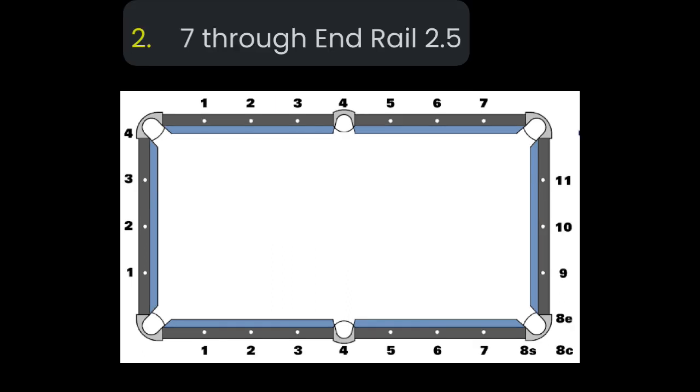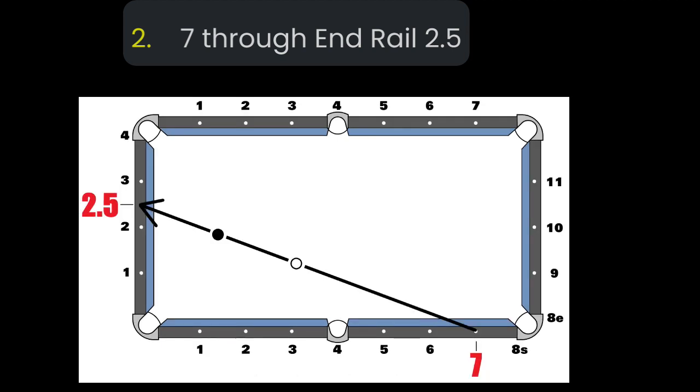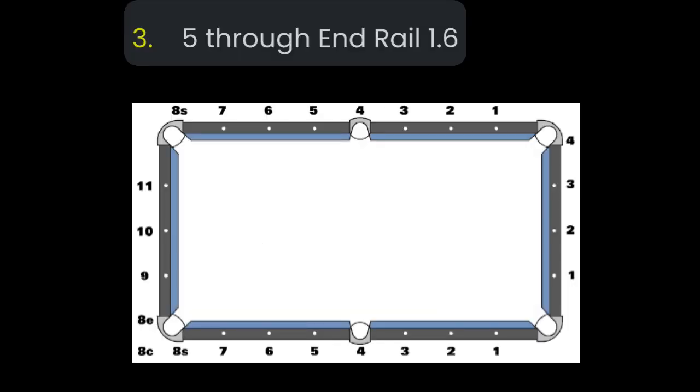Next, what would seven through end rail 2.5 be? Five through end rail 1.6 in the other direction.